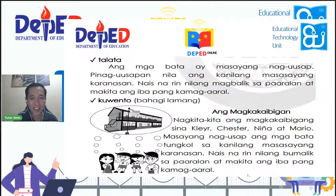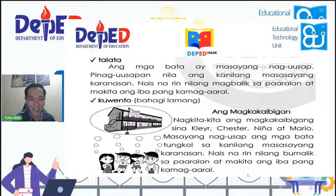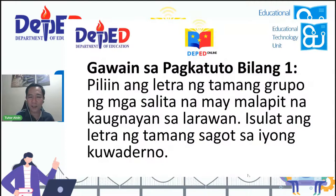Sa tuwing tayo ay magbabasa ng anumang bagay — maaring ito ay kwento, maaring ito ay isang balita, o maaring pag ikaw ay naglalakad sa kalye at may nakita kang karatula at ito ay iyong binasa — dapat naunawaan mo ang iyong binabasa o iyong binasa. Napaka-importante yan. Tatandaan yan ha? Dumako tayo sa isang gawain: Gawain sa Pagkatuto Bilang Isa. Piliin ang letra ng tamang grupo ng mga salita na may malapit na kaugnayan sa larawan. Isulat ang letra ng tamang sagot sa inyong kwaderno.